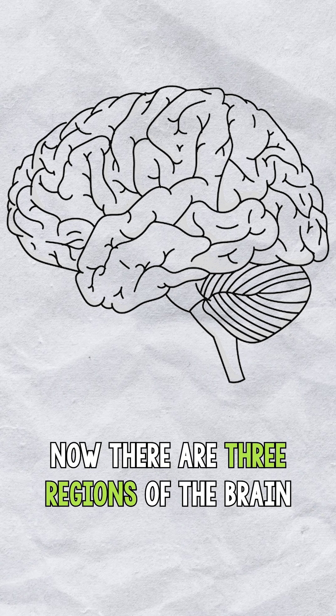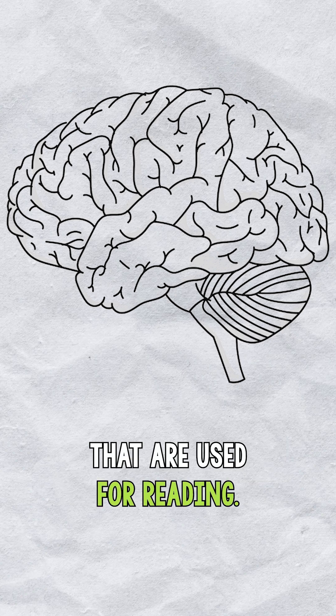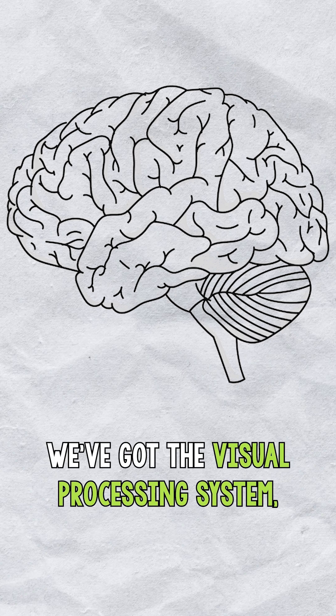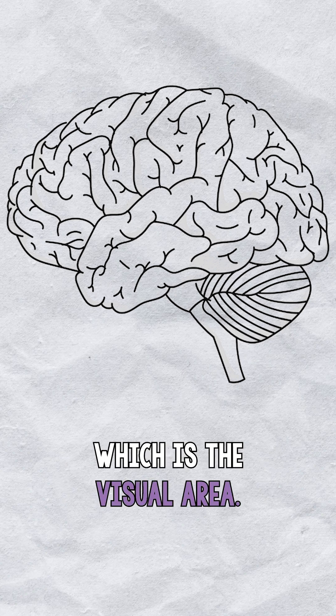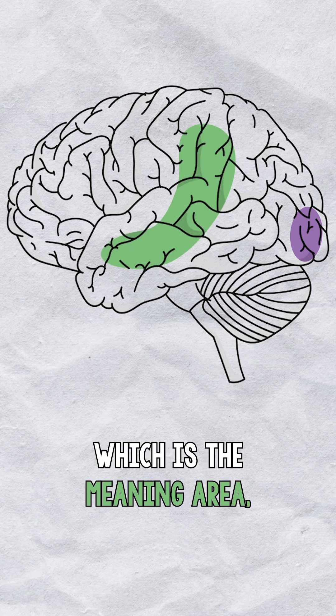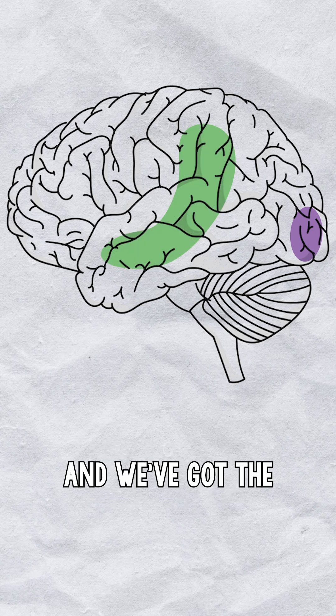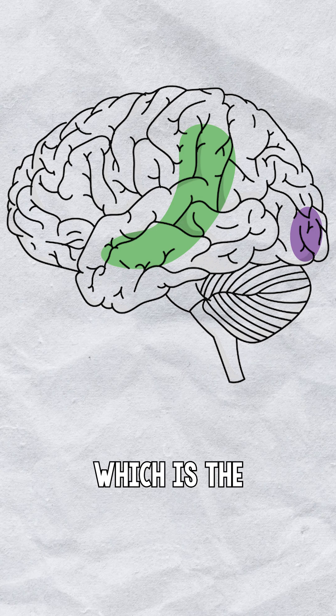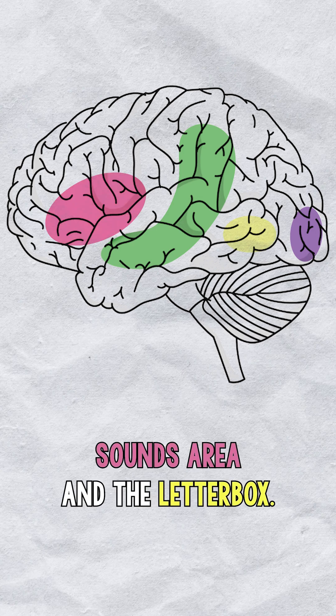Now, there are three regions of the brain of the left hemisphere that are used for reading. We've got the visual processing system, which is the visual area. We have the oral language comprehension, which is the meaning area, and we've got the speech production regions, which is the sounds area and the letterbox.